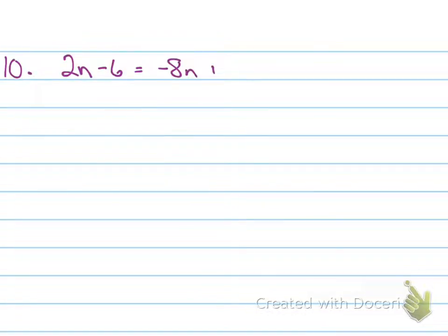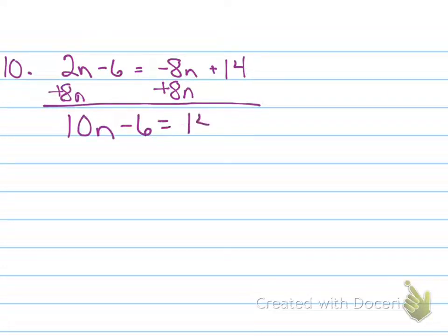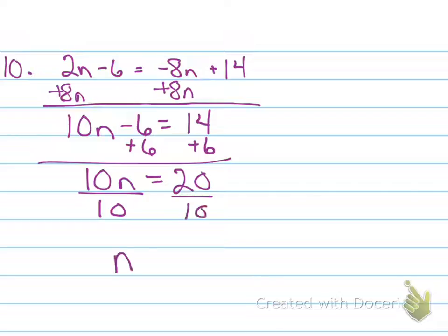Now on the next one, number 10. This one's a little different because it has variables on both sides of the equation. We learned in class that which one do we want to move? The lower one, the lesser value, so we can avoid having a negative coefficient. Which term do we move first? The negative 8 to the other side because it's the lesser. I add 8 to both sides, and I get 10n minus 6 equals 14. Add 6 to both sides. 10n equals 20, and divide both sides, and n equals 2. Just remember with the variables on both sides, move the lesser of the 2.